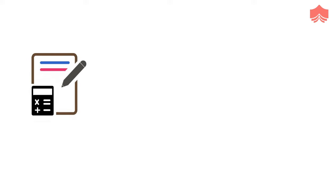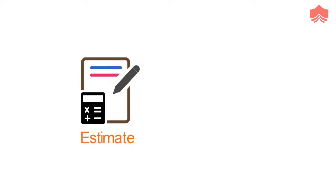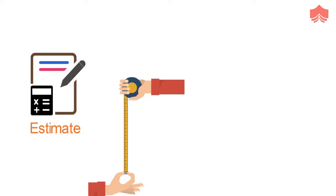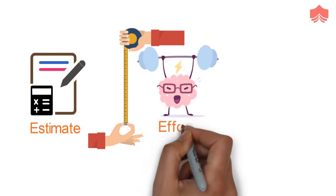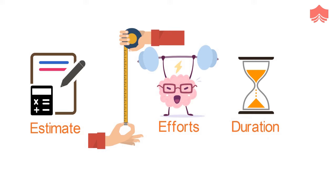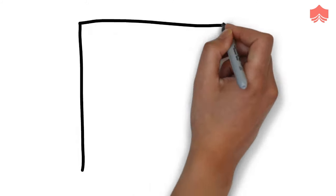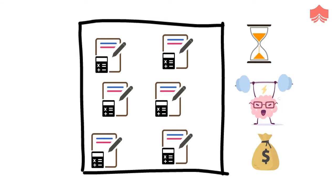Let's begin with understanding what is meant by estimation. In software development, an estimate consists of a quantified evaluation of the effort which is necessary to carry out a given development task. This is most often expressed in terms of duration. The intent here is to aggregate many individual estimates so as to obtain an indication of the overall duration, effort, or cost of a software project.